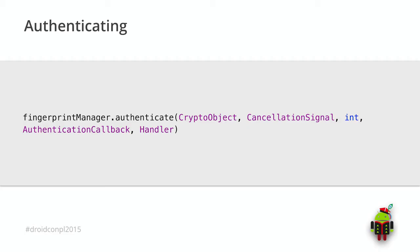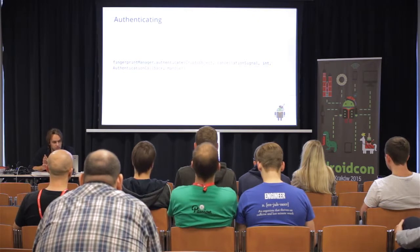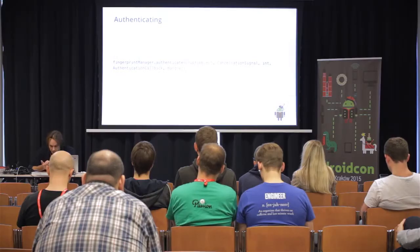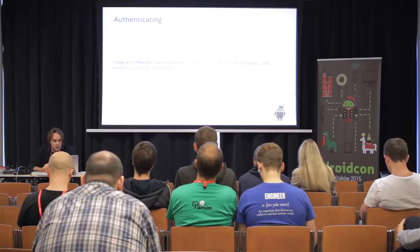Next, we need to call authenticate(). We should pass a CryptoObject to this method, a CancellationSignal which will help us determine if the authentication task was cancelled, integer params representing future flags, an AuthenticationCallback, and a Handler. The Handler is optional. The CryptoObject may be null if you are not using the KeyStore.